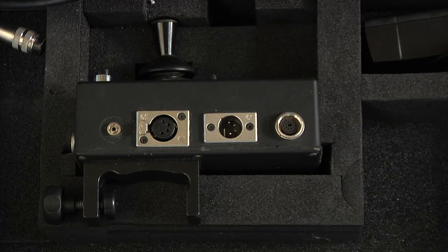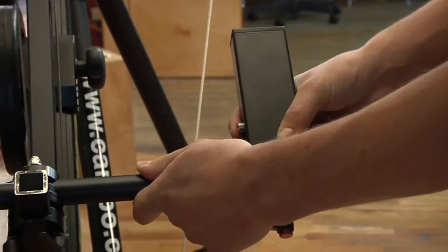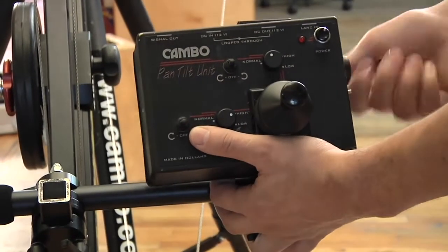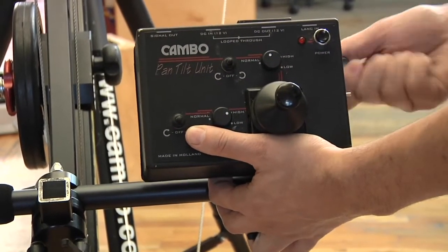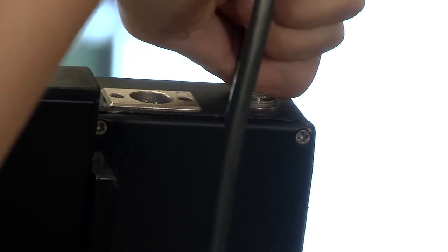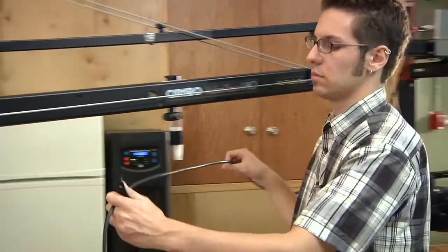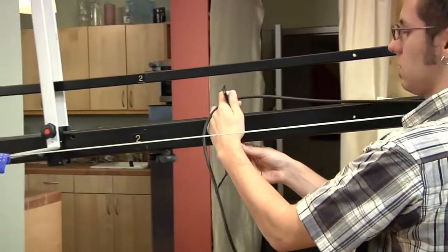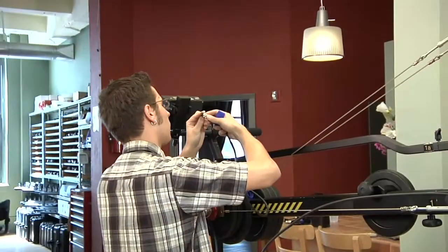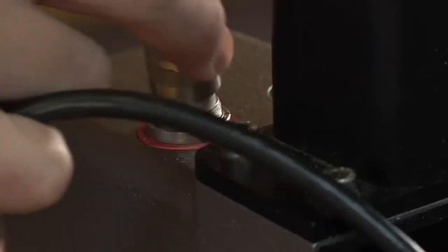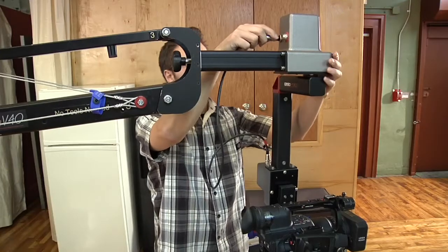Next is to attach the joystick to the back support arm using this mounting bracket. The control cable runs from here all the way up to the motorized head here. This short cable goes from here to here.